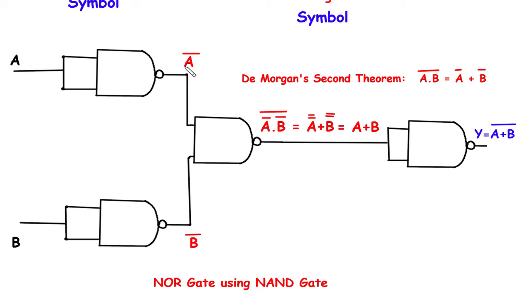Now this output of this NOT gate is the input of this NAND gate. So it will be A bar dot B bar whole complement.